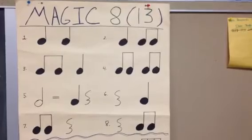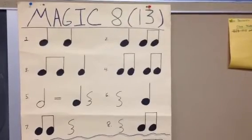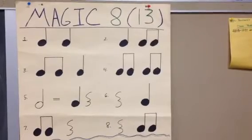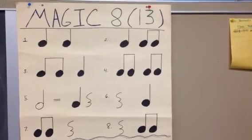For example, I could do pattern number one, followed by pattern number four. Ta, ta, ti-ti-ti-ti. One and four are both two beats each. Combine them and then I get a four-beat pattern.